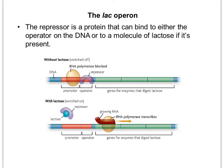In the situation without lactose — meaning there is no lactose in the cell — the repressor is going to be bound to the operator, acting like a physical roadblock. That means RNA polymerase cannot get to these genes and transcribe them. It doesn't make sense to have enzymes that digest lactose if there is no lactose around, so the repressor blocks RNA polymerase and the operon is essentially shut off.